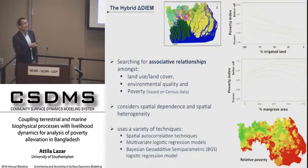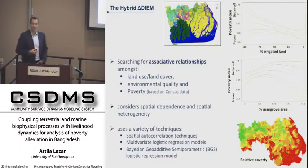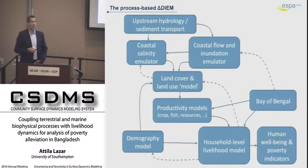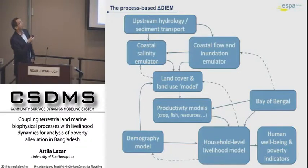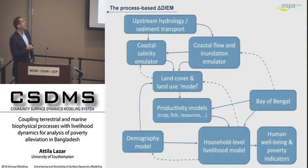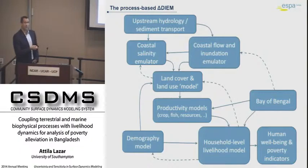These are just two examples. There are others on salinity and other aspects that we would like to combine in a statistical model applied in the Delta DEM framework. The more process-based model has hydrology sediment transport models feeding into coastal inundation and salinization emulation, which feeds into a land-use land cover model together with demographic changes. We run productivity models, household-level assumptions, and estimate human well-being.